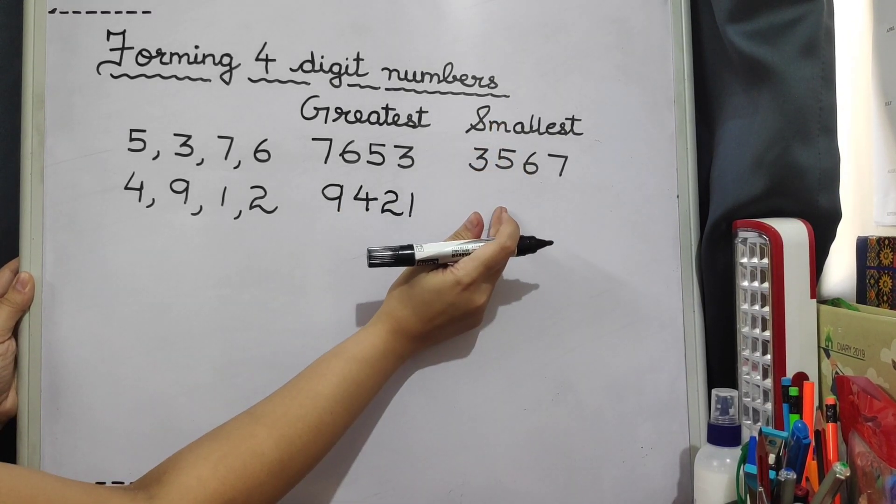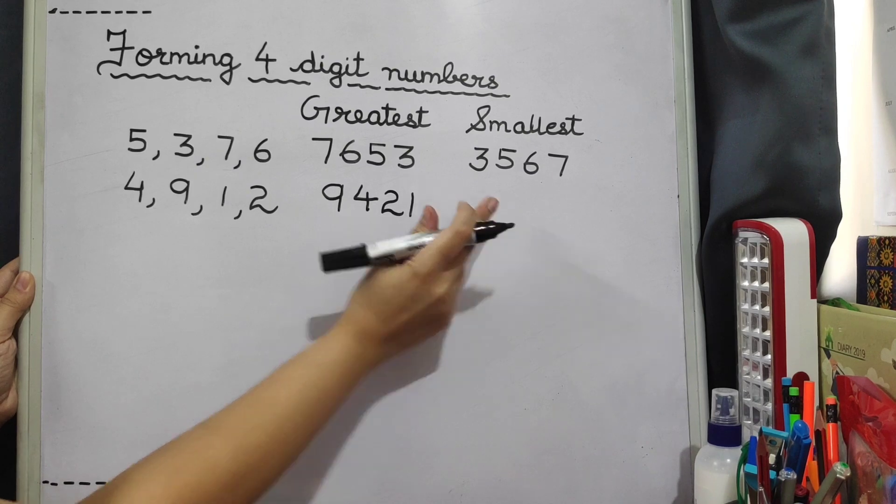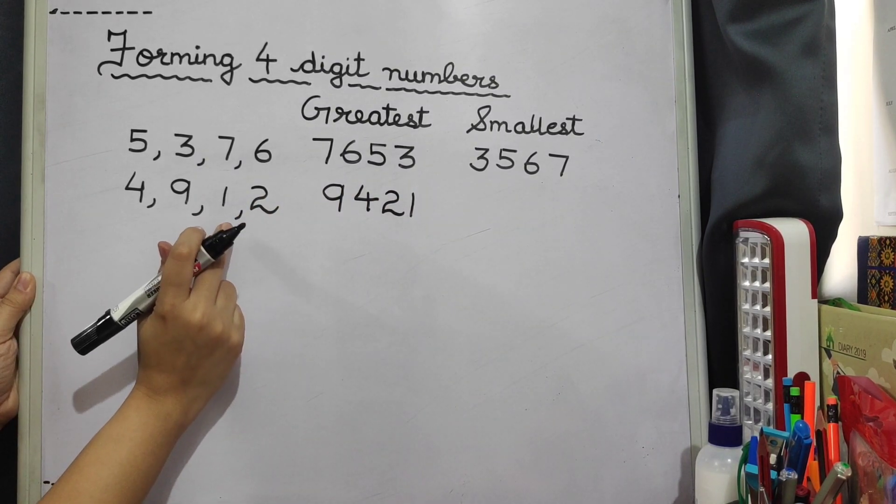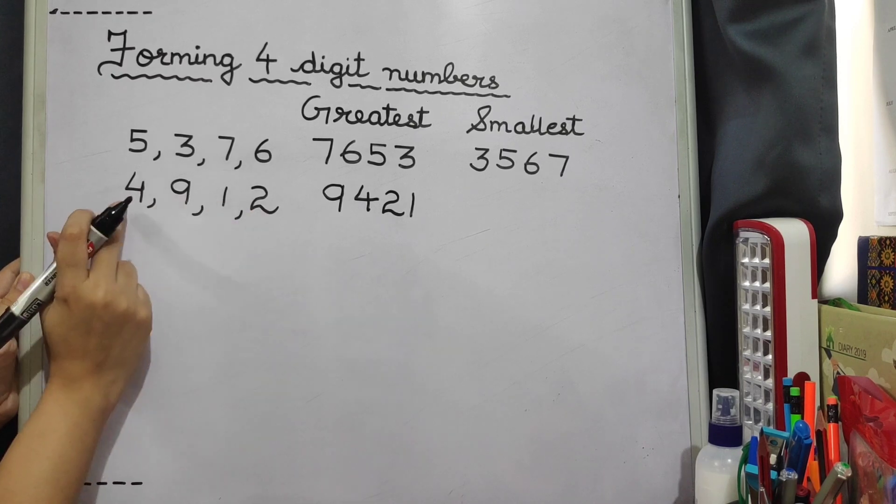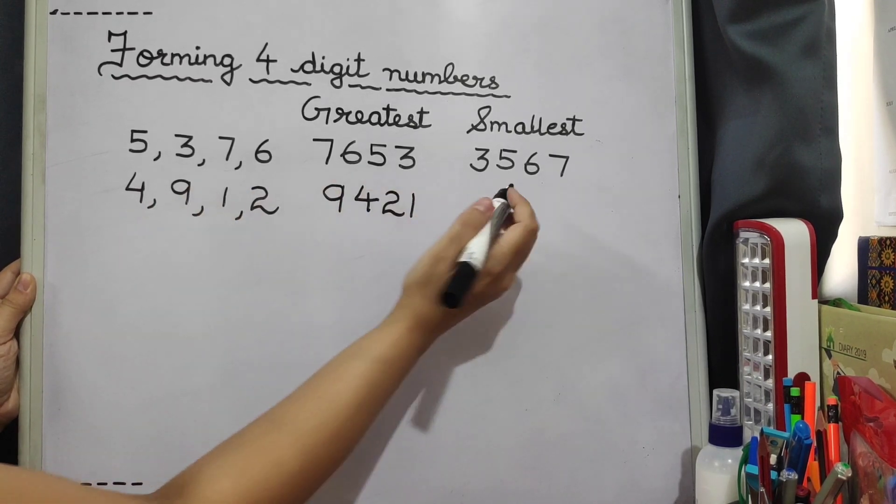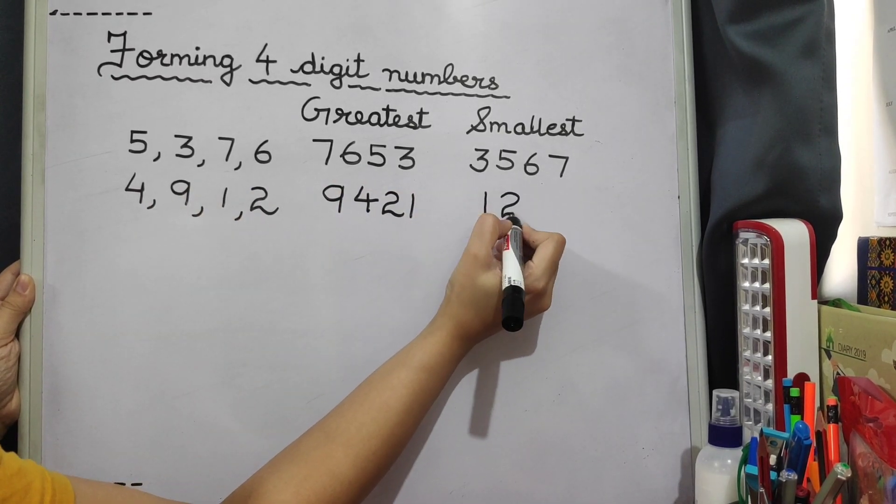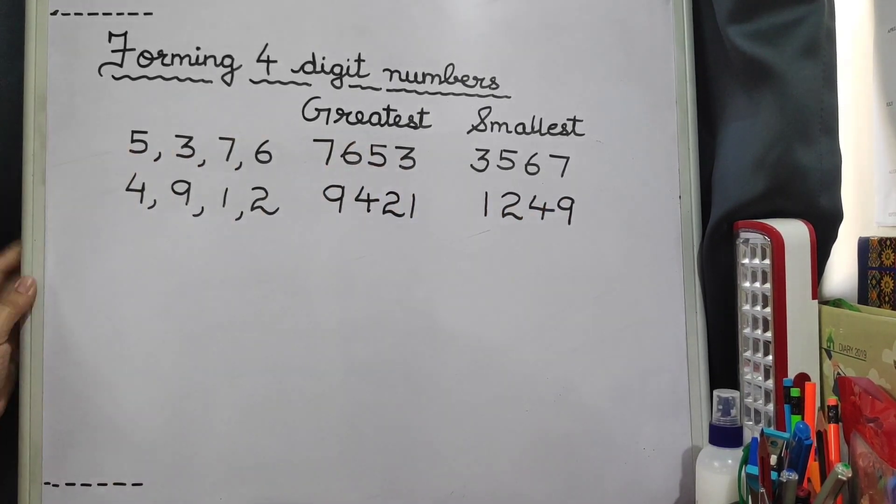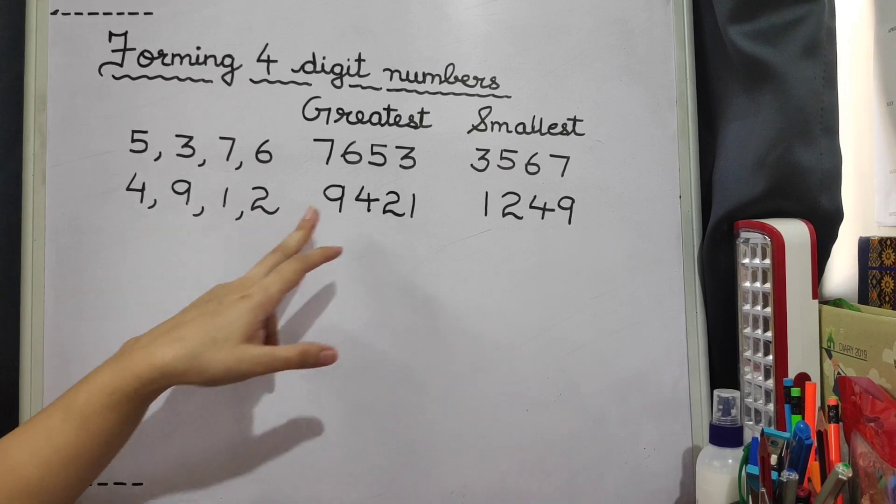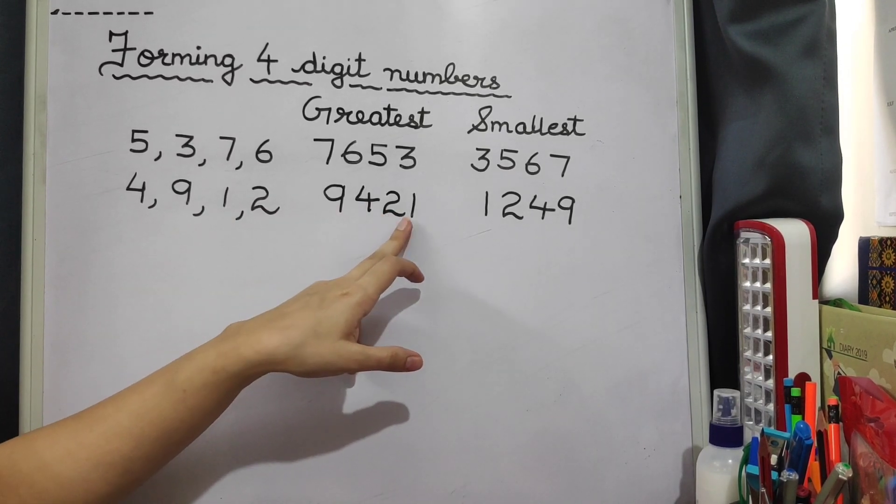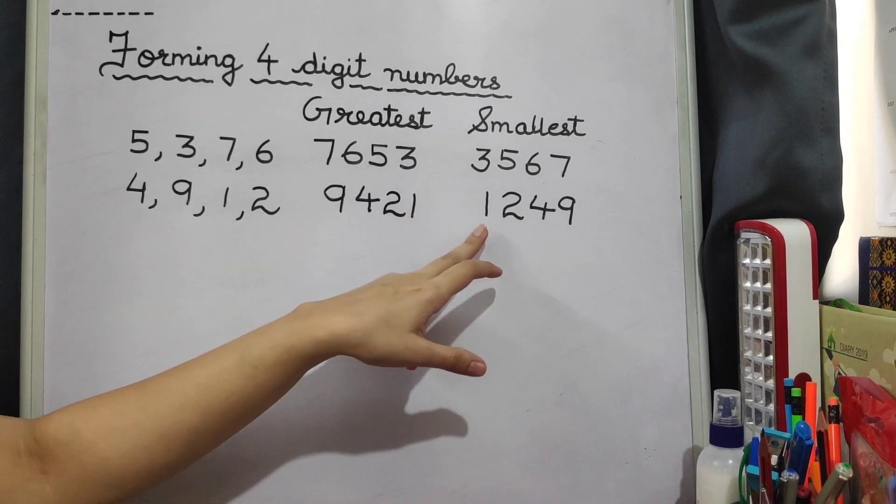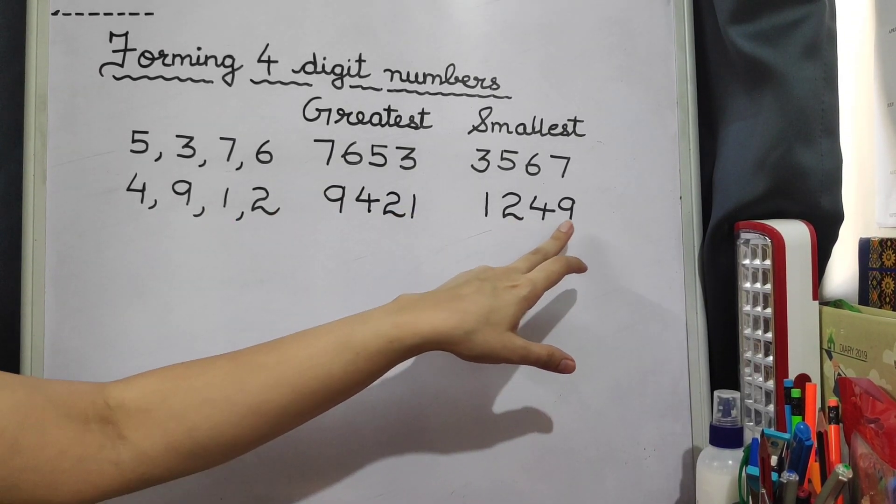And for the smallest number we have to start with the smallest number, smallest digit given here which is 1, 2, 4 and then 9. So the greatest number using these digits is 9421. And the smallest number using these digits will be 1249.